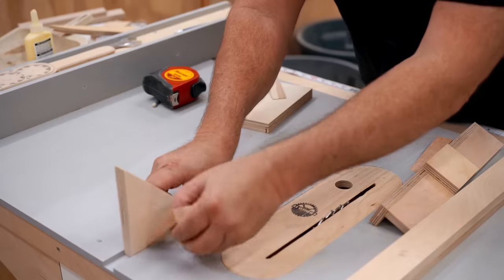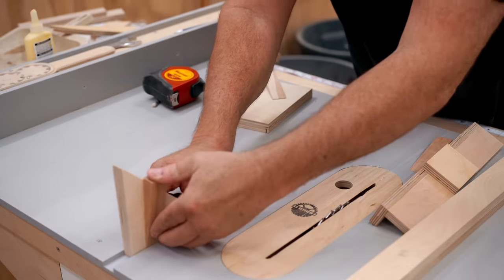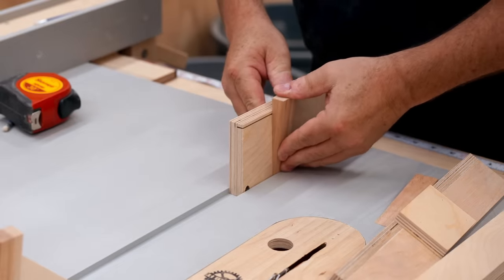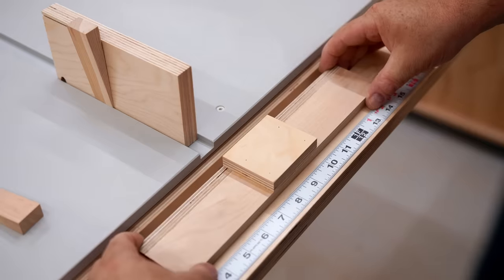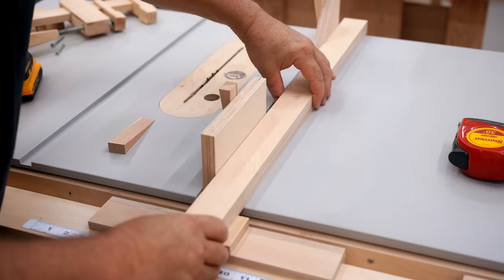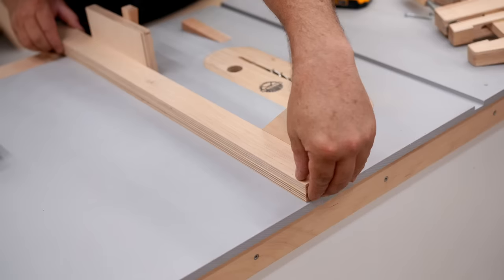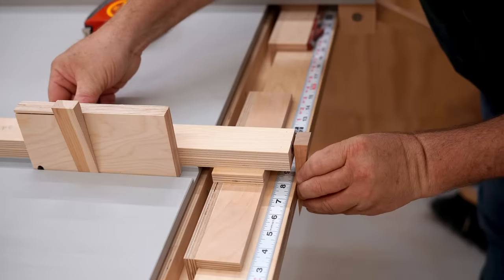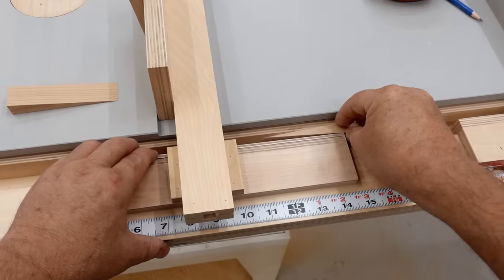I let the glue dry for about an hour and now I'm going to fasten the fence base to the T. These parts need to be squared to each other, so the best way to do that is on the table saw itself. I'm taking these blocks and I'm wedging them into the miter slot.